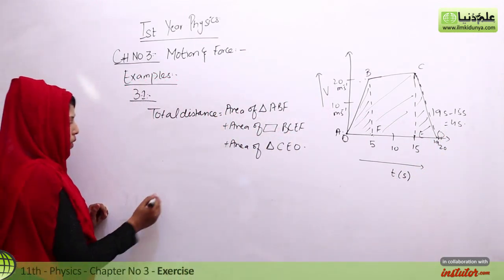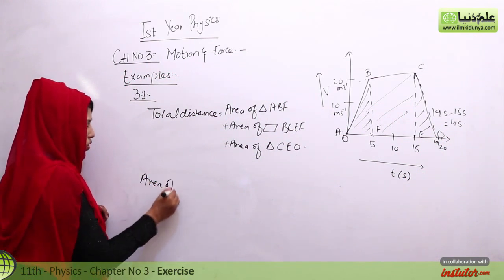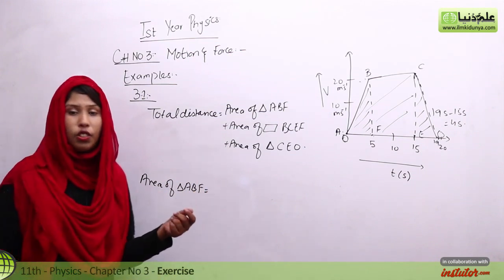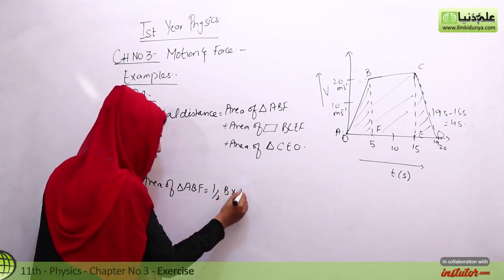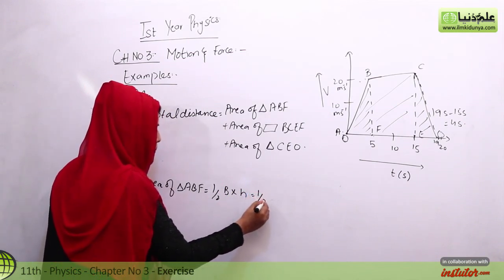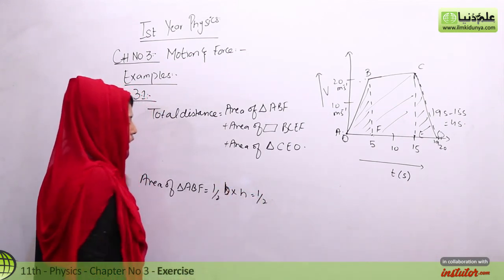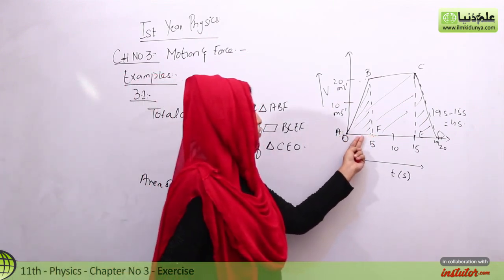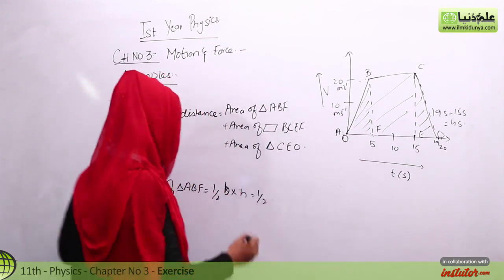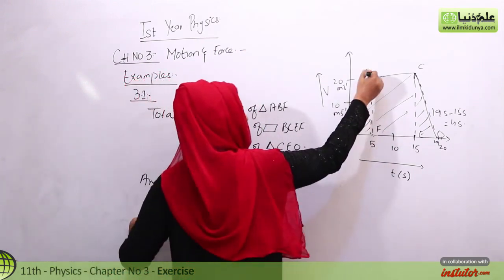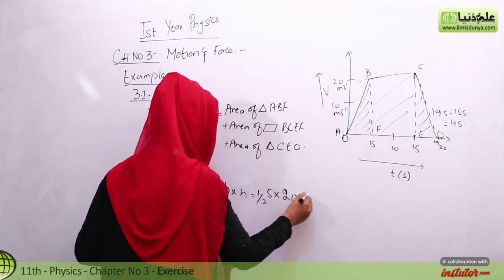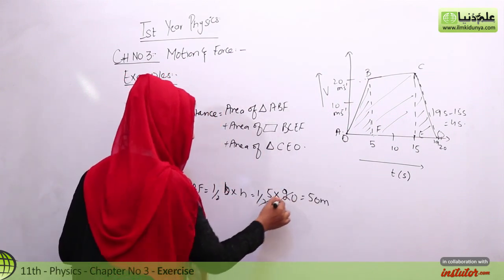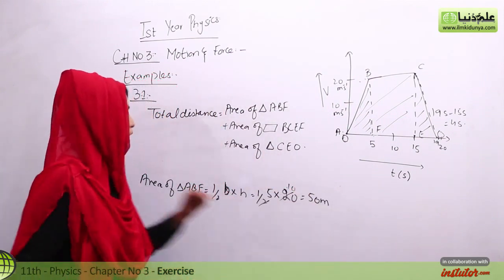First, we find the area of triangle ABF. The formula is 1 by 2, base into height. The base here is 5 seconds and the height is 20. So 1/2 times 5 times 20 equals 50 meters. That is the area of the first triangle.